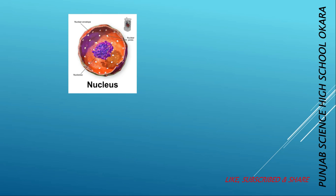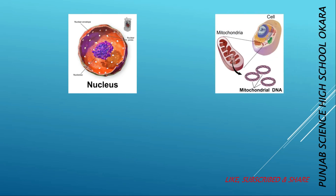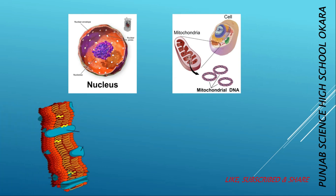A thin membrane, called nuclear membrane, surrounds the nucleus. Many thread-like structures called chromosomes are present in the nucleus. The outermost covering of a plant cell is called the cell wall. In plant cells, the cell membrane is present next to the cell wall. The cell membrane controls the movement of materials in and out of the cell.